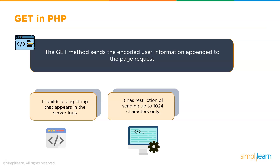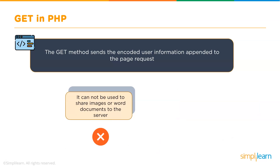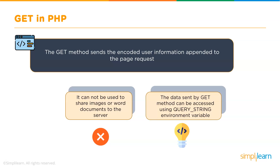The GET method is restricted to sending up to 1024 characters only. Never use the GET method if you have a password or other sensitive information to be sent to the server, since it will show in the browser's location box. GET can't be used to send binary data like images or Word documents. The data sent by the GET method can be accessed using the query string environment variable.